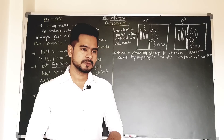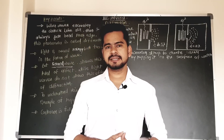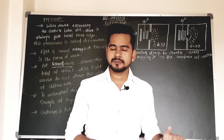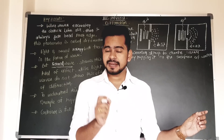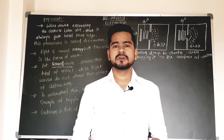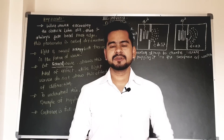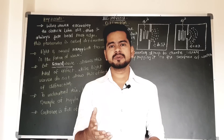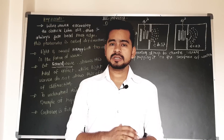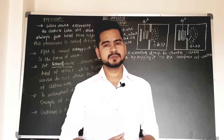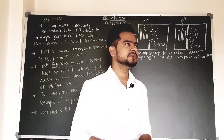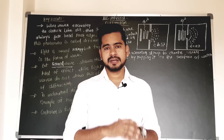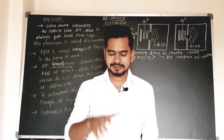The formula for path difference is: x·d / D = r₂ − r₁ = nλ for constructive interference. For destructive interference it is: x·d / D = r₂ − r₁ = (2n − 1)λ / 2. We also derived the distance between two consecutive bright fringes as well as the distance between two consecutive dark fringes. After learning all those interference concepts, let's now start this class on diffraction.